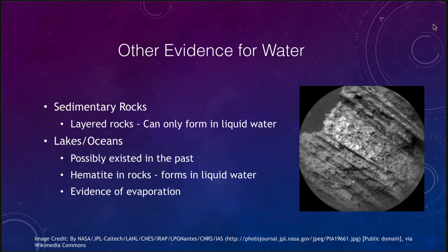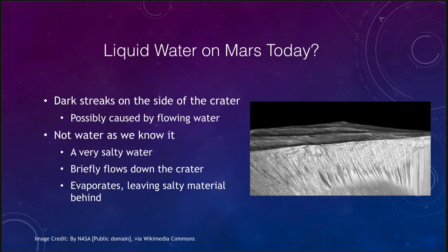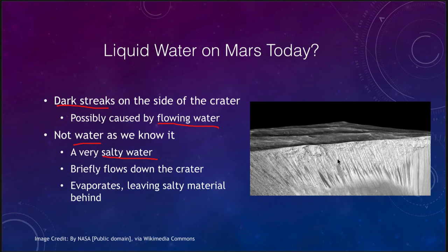The question is: is there any liquid water on Mars today? The quick answer is really no. But there are some possibilities studied recently, such as the dark streaks in certain craters, which were possibly caused by flowing water. These formed very recently — within a year or so — as material was being heated up. However, this is not water as we know it. It is a very salty, briny water that would briefly flow down the crater walls, evaporating very quickly and leaving the salty material behind as deposits. But it is a sign that liquid water of some type still flows on Mars today, though nothing like the rivers or floods seen in the previous images.